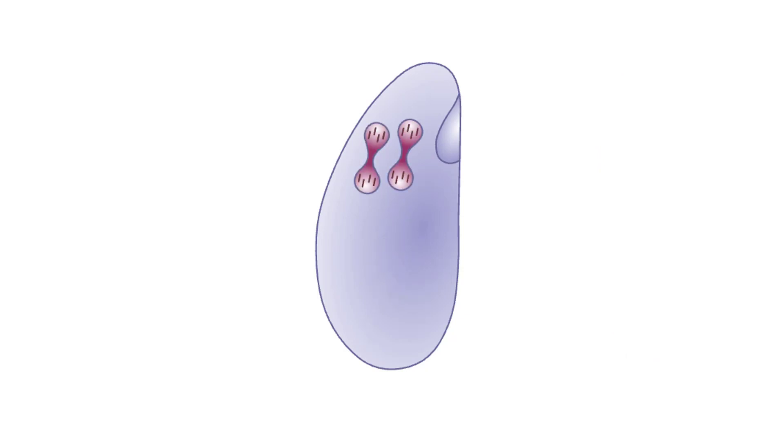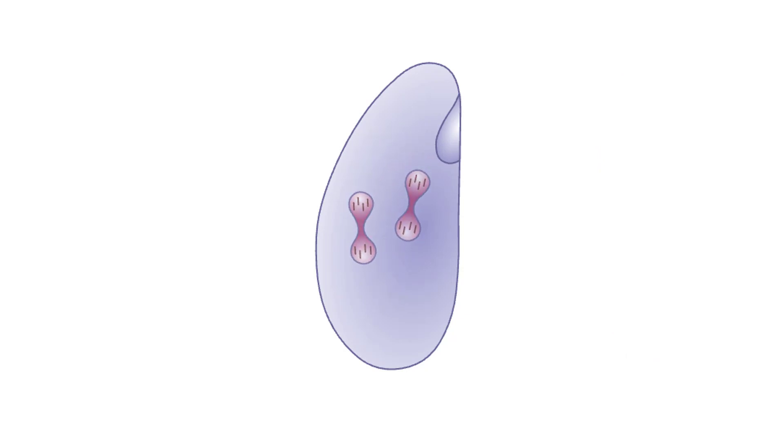The cell now has four micronuclei. Two of the micronuclei develop into macronuclei. The cell divides.